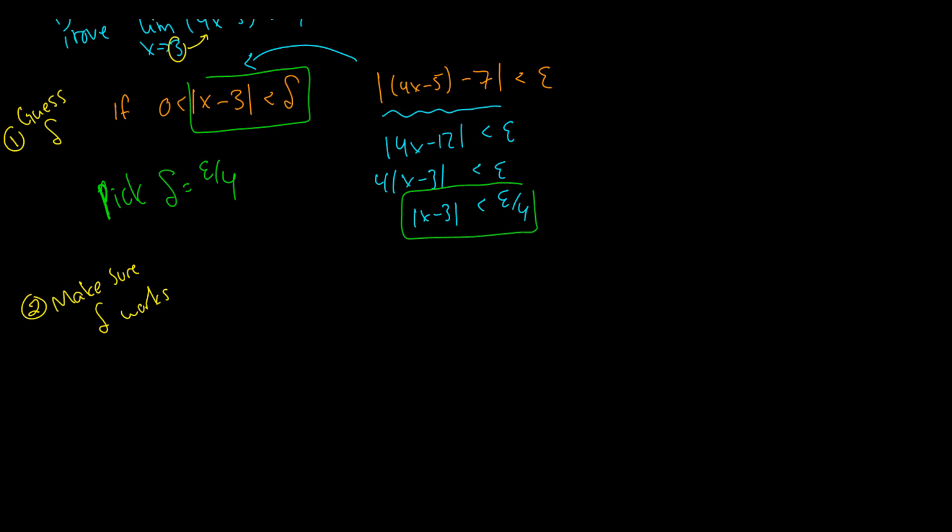Okay, so we're going to start with the right side again. So we're going to say 4x minus 12 is equal to 4 times x minus 3. And what do we know about x minus 3?